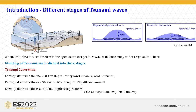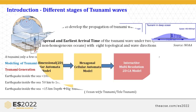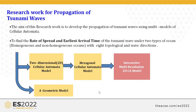An earthquake inside the sea greater than 100 kilometres is considered a local tsunami. Between 50 and 100 kilometres is the second-wave tsunami. Less than 50 kilometres is considered a big or daily tsunami. The aim of this research work is to develop the propagation of the tsunami wave using a multi-model of cellular automata, to find the rate of spread and the estimated arrival time under two types of ocean conditions: homogeneous and non-homogeneous, with eight topological conditions and wave directions.